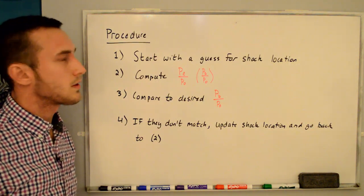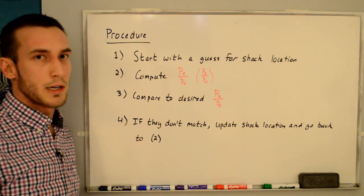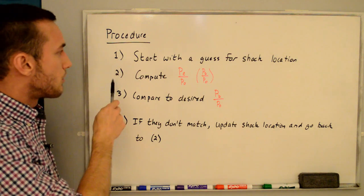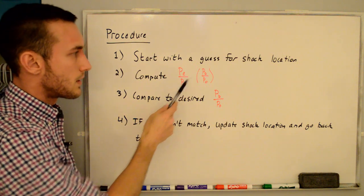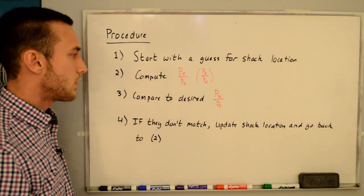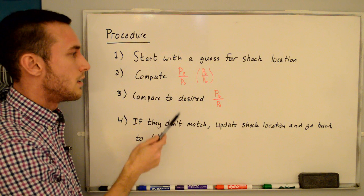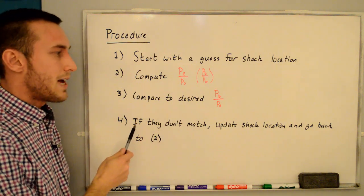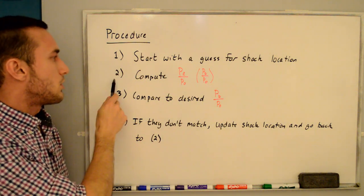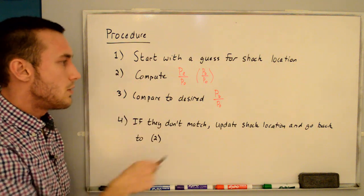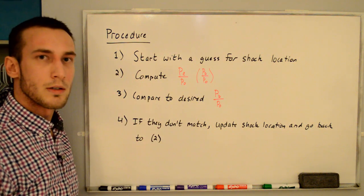Here is the procedure. First, start with a guess for the shock area ratio. Second, compute the exit to reservoir pressure PE/P0, which equals PB/P0. Third, compare that computed value to the desired value. If they don't match, update the shock location and go back to step 2, continuing to iterate until within some error tolerance.